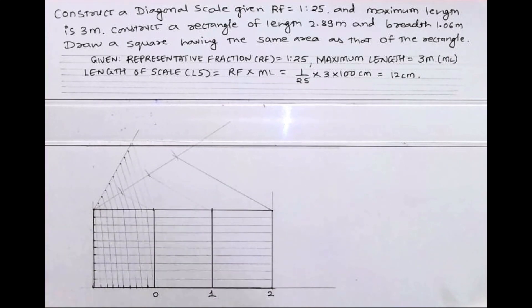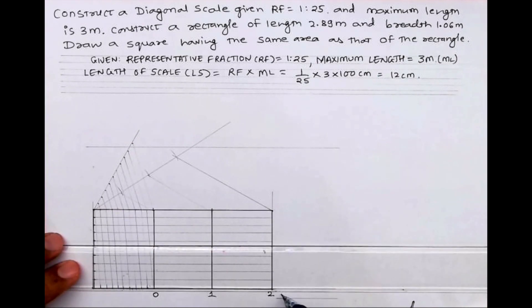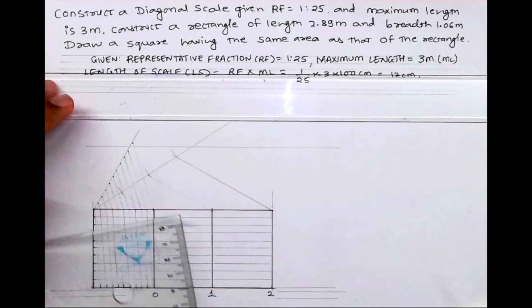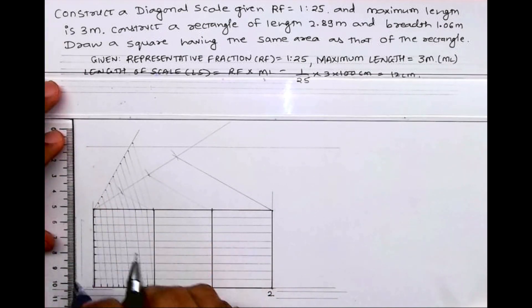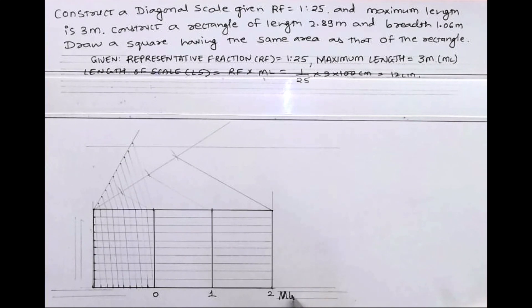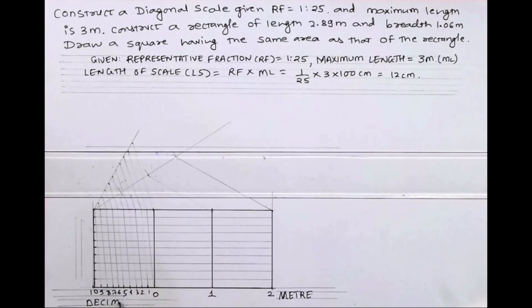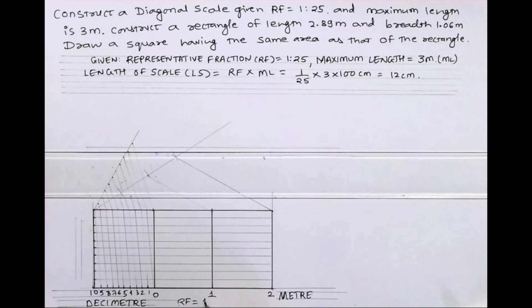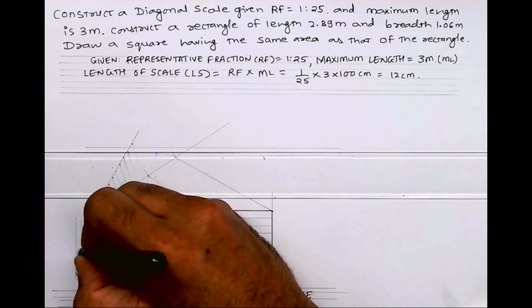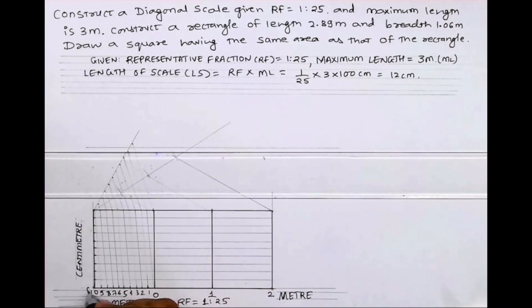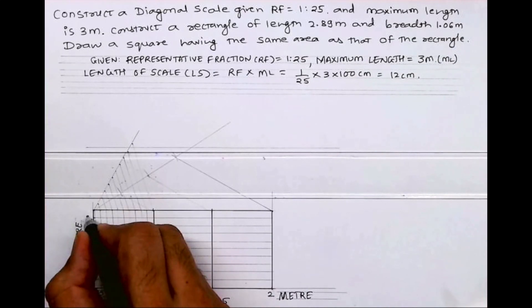Now this side we write meters: 0, 1, 2. Over here we write meters 0, 1, 2, 3. We'll write till 10, and this one will be decimeter, so we'll write decimeter over here. This is RF 1 is to 25, and this is centimeters: 0, 1, 2, 3, 4, 5, 6, 7, 8, 9, 10.